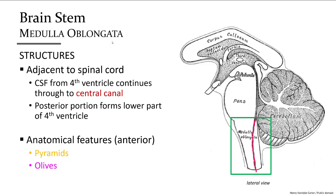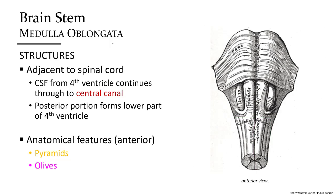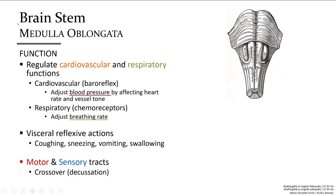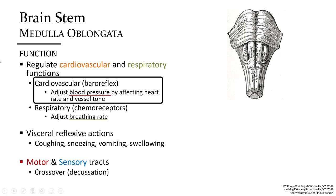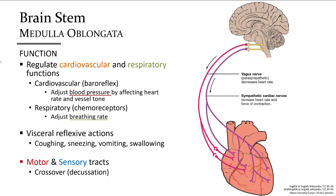Cerebrospinal fluid from the ventricles leaves the fourth ventricle — a space between the pons and medulla anteriorly and the cerebellum posteriorly. Once exiting the fourth ventricle, it enters the medulla oblongata via the central canal and continues down the spinal cord. On the anterior surface, the tapering shape of the medulla oblongata is marked by medial longitudinal ridges called pyramids and lateral bulges called the olives. The medulla receives information from baroreceptors about blood pressure and makes adjustments via heart rate, force of contraction, and blood vessel dilation or constriction.